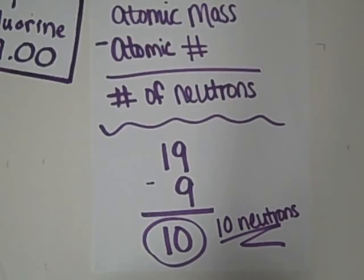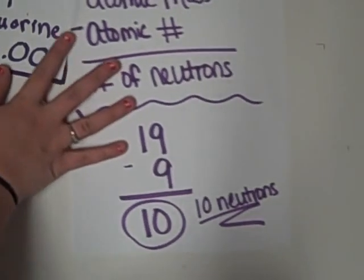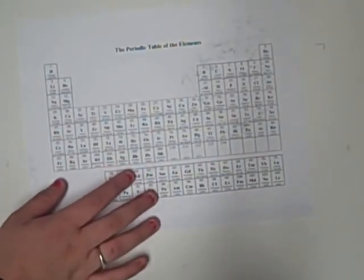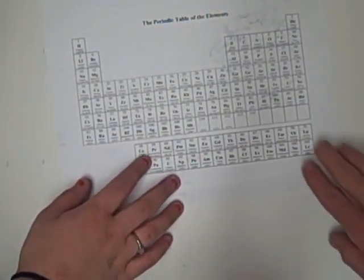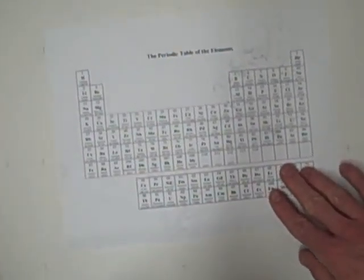Can you tell me about the metals and families? Yes. The metals are the elements that are good conductors of electric current and heat. Except for mercury, metals are solid at room temperature.